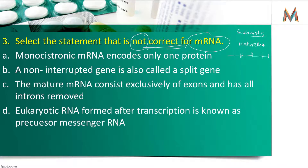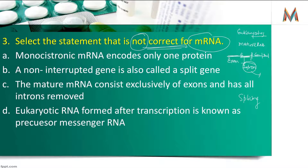जो sequences code नहीं कर पाते उन्हें हटाना जरूरी है — उन्हें intron बोलते हैं। और जो बाद में code करेंगे वो exon होंगे। Exon-intron-exon-intron का sequence होता है। Intron को हटाने के बाद एक complete meaningful sequence बनता है — इस process को splicing कहते हैं। Splicing से पहले यह intervening gene है, यानि interrupted है। तो 'non-interrupted gene' कहना बिल्कुल गलत है।